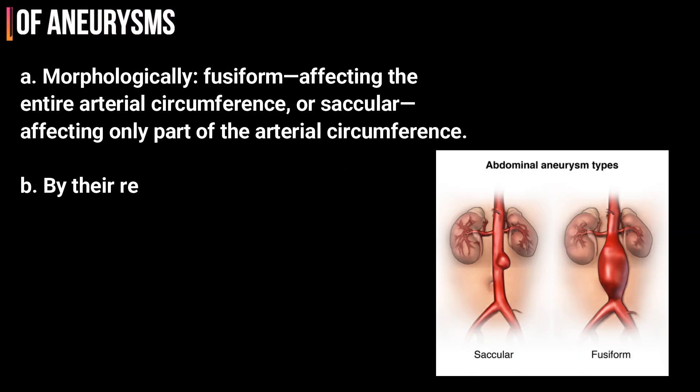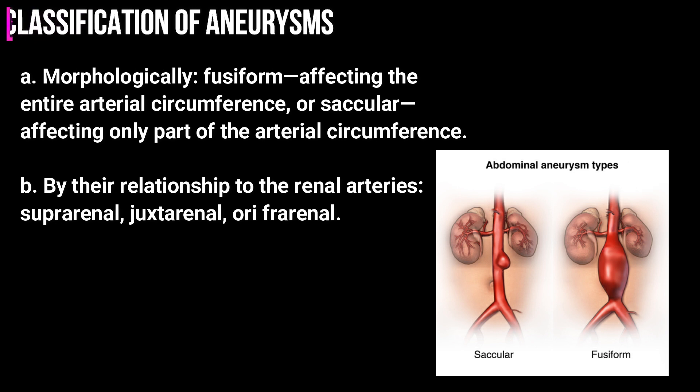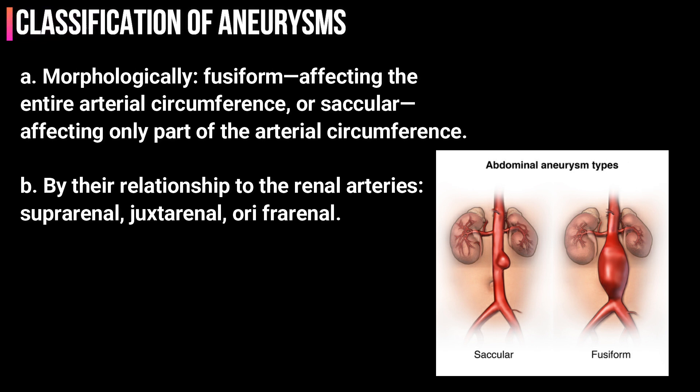The classification of aneurysms is based on morphology: fusiform, affecting the entire arterial circumference, or saccular, affecting only part of the arterial circumference. They can also be classified by their relationship to the renal arteries: suprarenal, juxtarenal, or infrarenal.